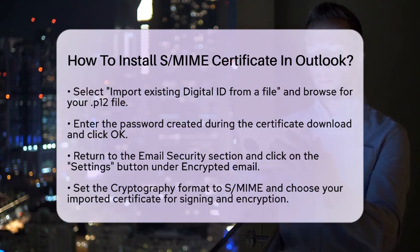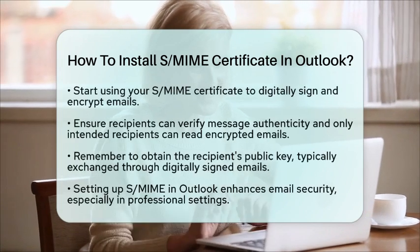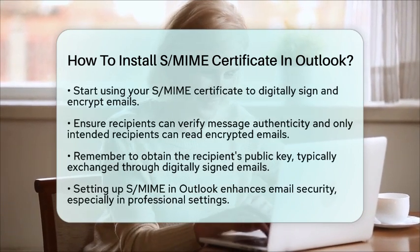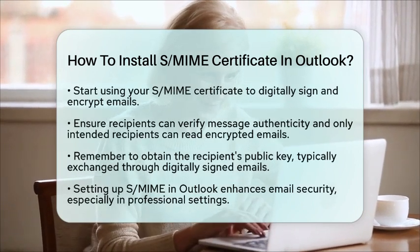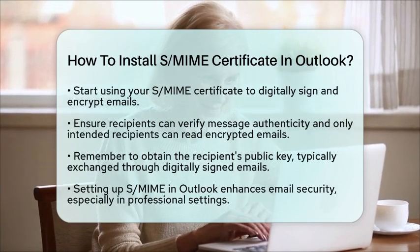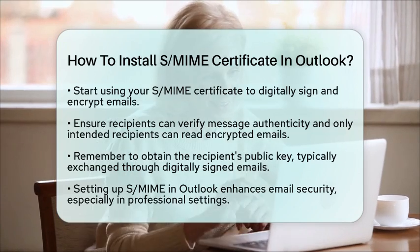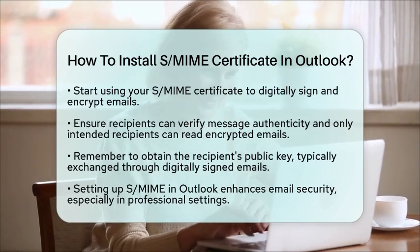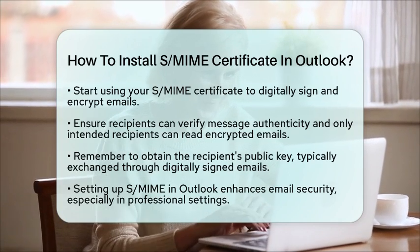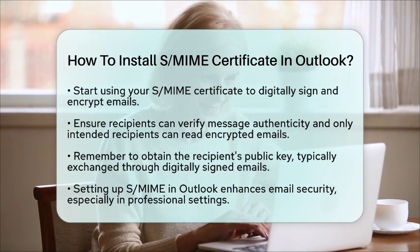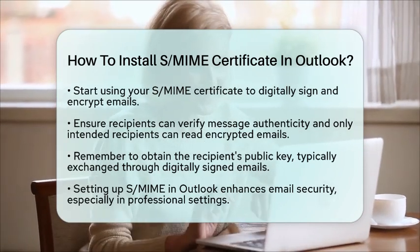Once you have completed these steps, you can start using your S/MIME certificate to digitally sign and encrypt your emails. This ensures that your recipients can verify the authenticity of your messages, and that only the intended recipients can read your encrypted emails. To send encrypted emails, remember that you will need the recipient's public key, which is typically exchanged through digitally signed emails. Setting up S/MIME in Outlook significantly improves your email security, and is especially useful in professional settings where sensitive information is often shared.